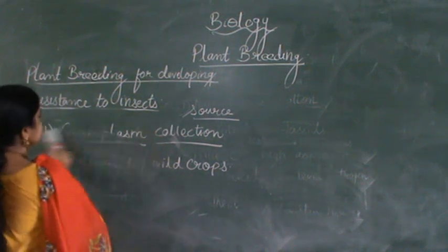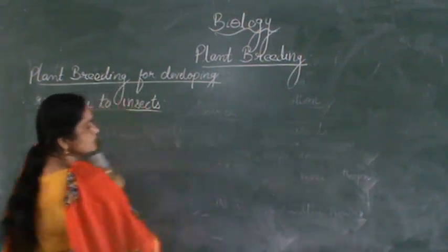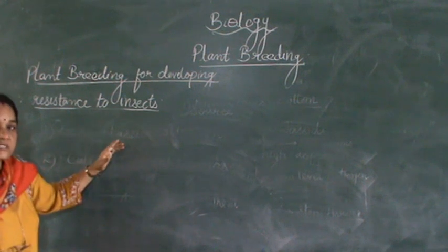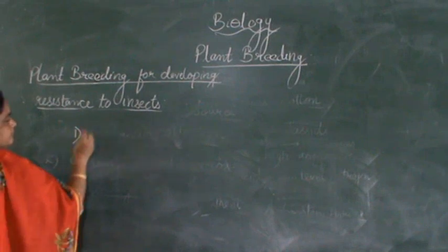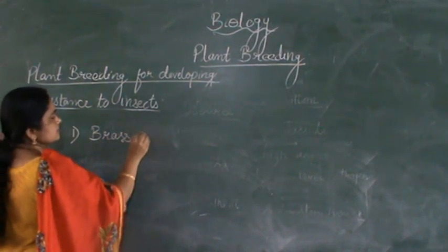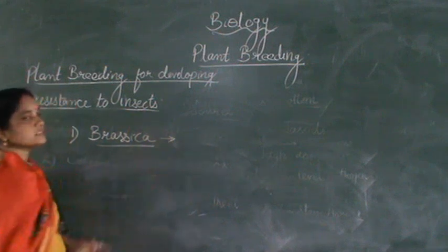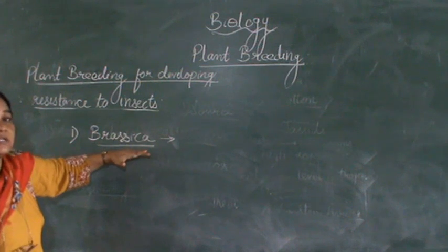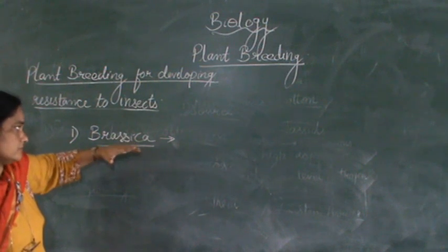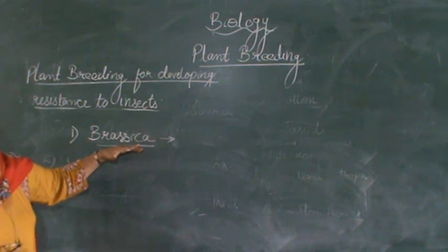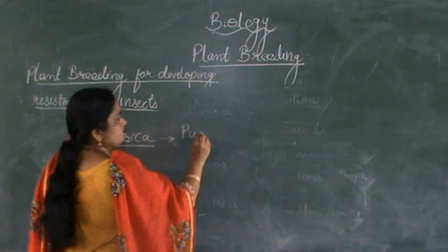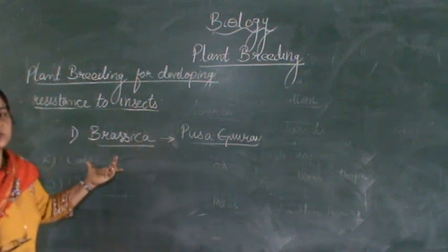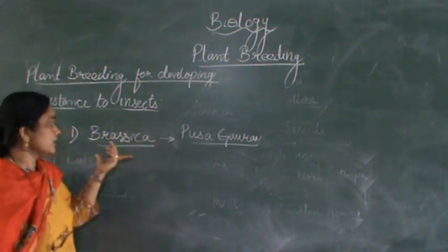For example, the plants which have been developed and bred in India for developing resistance towards insects include Brassica, which is mustard. For developing resistance towards certain insects, a hybrid variety of mustard is developed that is known as Pusa Gaurav. It develops resistance towards the insects known as jassids.